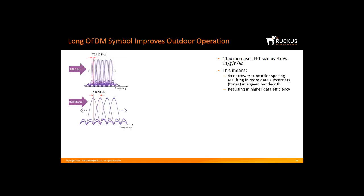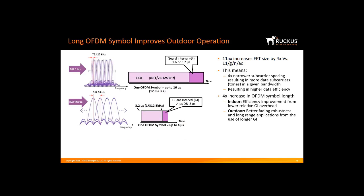So we go from 312.5 kHz to 78.125 kHz per subcarrier. This gives us a frequency domain efficiency and capacity increase, as it provides four times more tones or subcarriers to allocate to multiple users. However, it comes at a price, since the narrower subcarrier spacing is more sensitive to frequency offsets, phase noise, and sampling clock offsets.